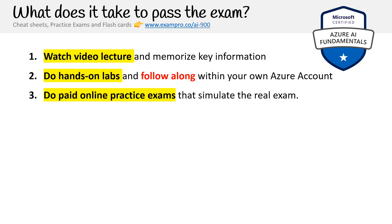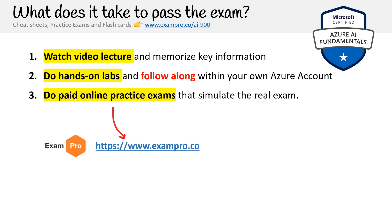You want to do paid online practice exams that simulate the real exam. I have paid practice exams accompanying this course on my platform, ExamPro, and that's how you can help support more of these free courses. Can you pass without taking a practice exam? Azure is a little harder — for an AWS exam I'd say yes, but for Azure it's kind of risky. For the AI-900, DP-900, and SC-900, I think you should get at least one practice exam, or go through the sample one available on the Azure website.